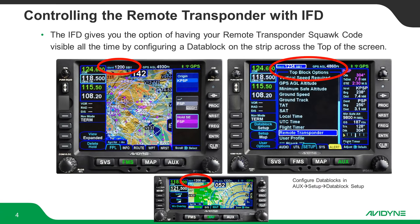You can go into the data block setup and configure the data blocks so that you have your squawk code displayed all the time, which is really convenient. We're showing how you can configure it to put it on one of the top blocks on the strip across the top of the map. Go to the AUX page, setup tab, then hit data block setup, scroll to the top blocks, and on the small knob scroll down to remote transponder — that will allow it to display all the time.